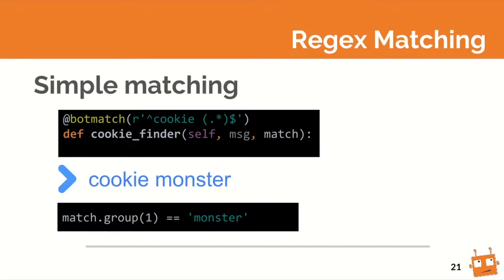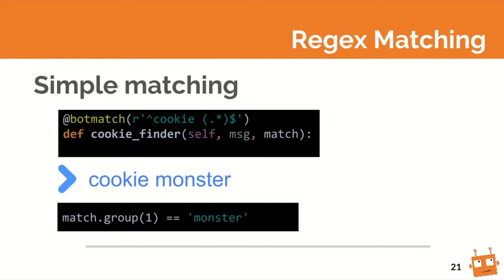So far we saw only commands triggered with an exclamation mark at the beginning of the line — you can actually change this to anything you want. But you can also listen to every single message the bot receives and match a regex on it, just with bot_match. You pass it a regex with capturing groups, and your method signature just needs a parameter called match — that's going to be exactly the regex match object as if you did it manually.